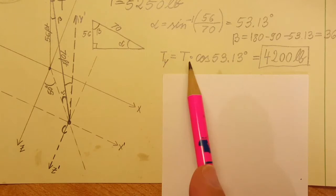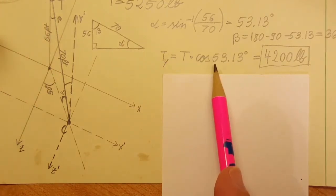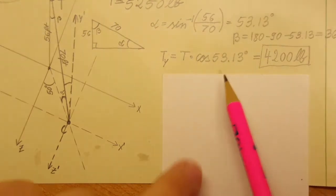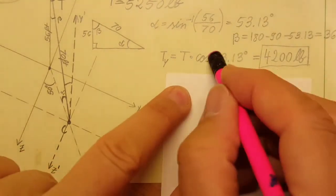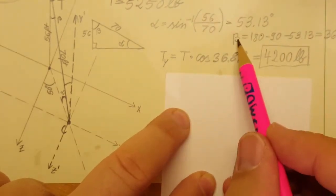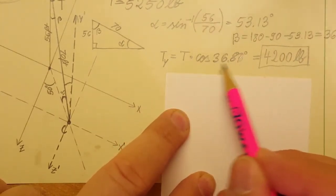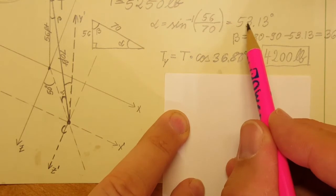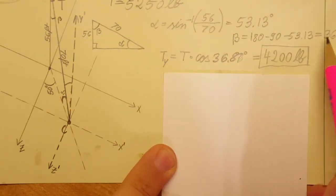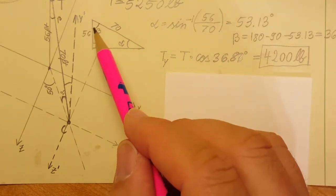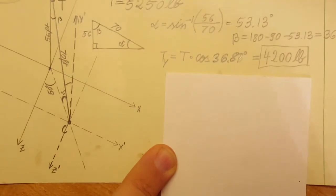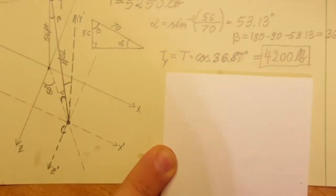T_y equals T times cosine of the angle that we found. I wrote the wrong one over here initially, but this angle is beta, which is what we need to use, not alpha. This gives us 4200 pounds.